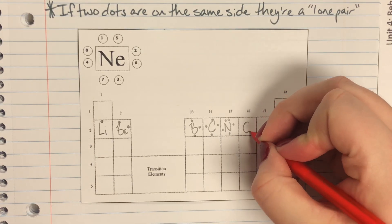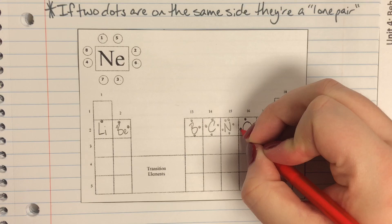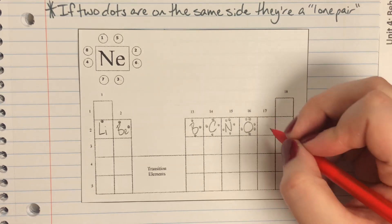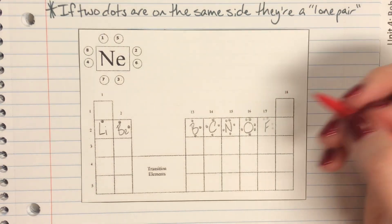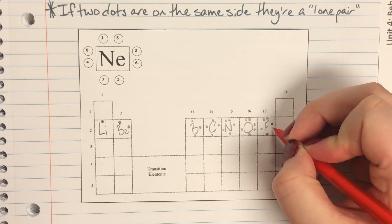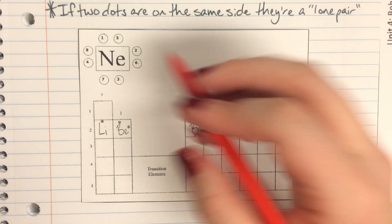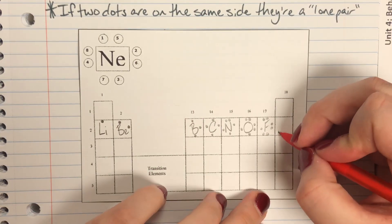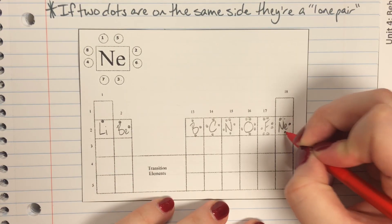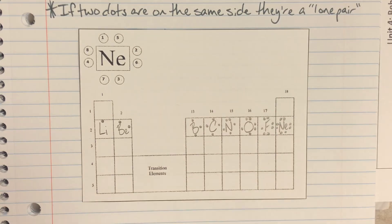And then we have oxygen. Oxygen is in column six so I will have one, two, three, four, five, six dots for oxygen. Two lone pairs. Next I'll have fluorine who's in column seven so I will have one, two, three, four, five, six, seven dots. Lastly I have neon who we see up there as our exemplar but we'll go ahead and draw neon again. So we're gonna have one, two, three, four, five, six, seven, eight. And we're done.